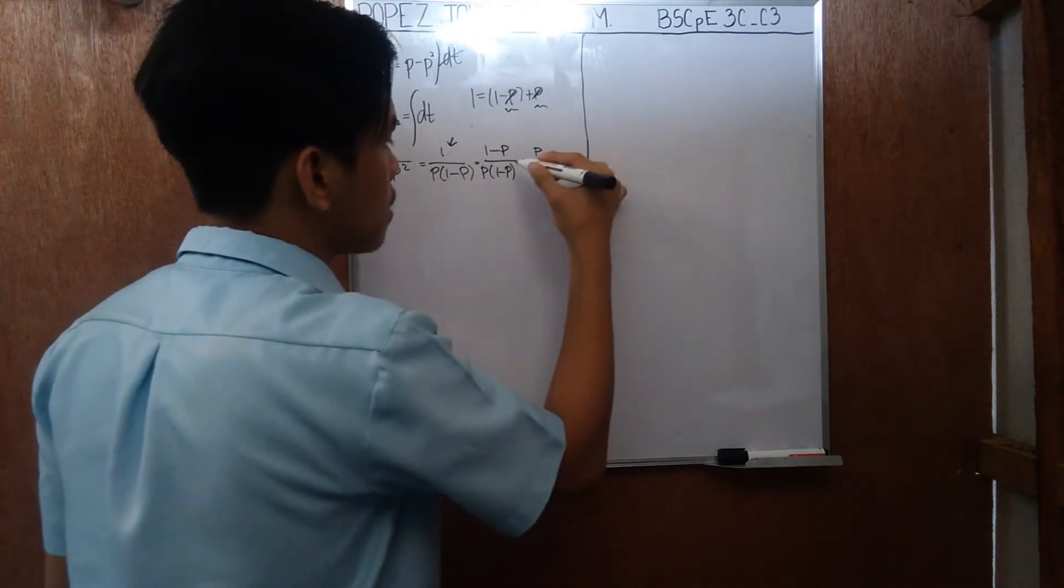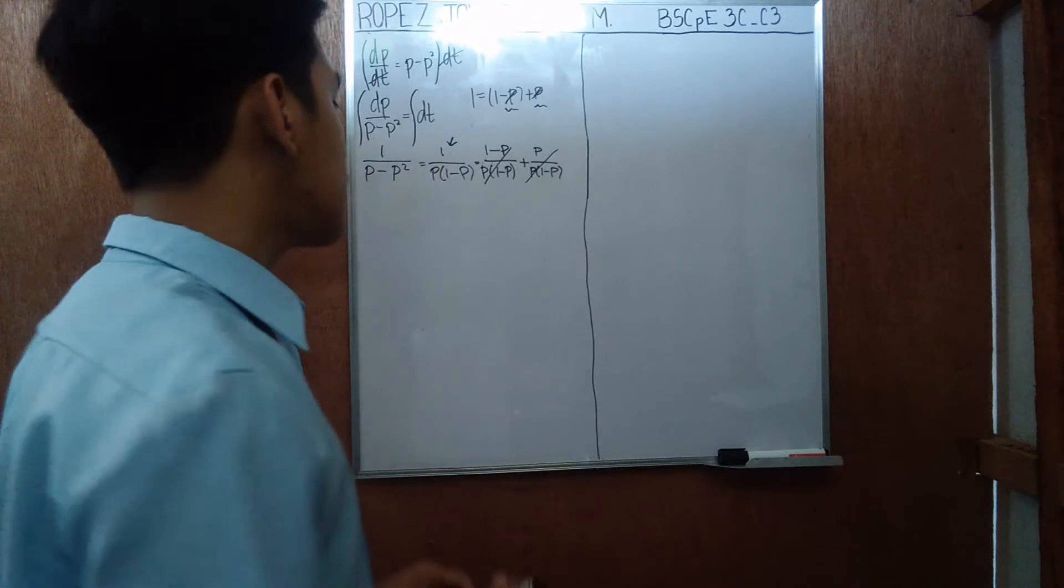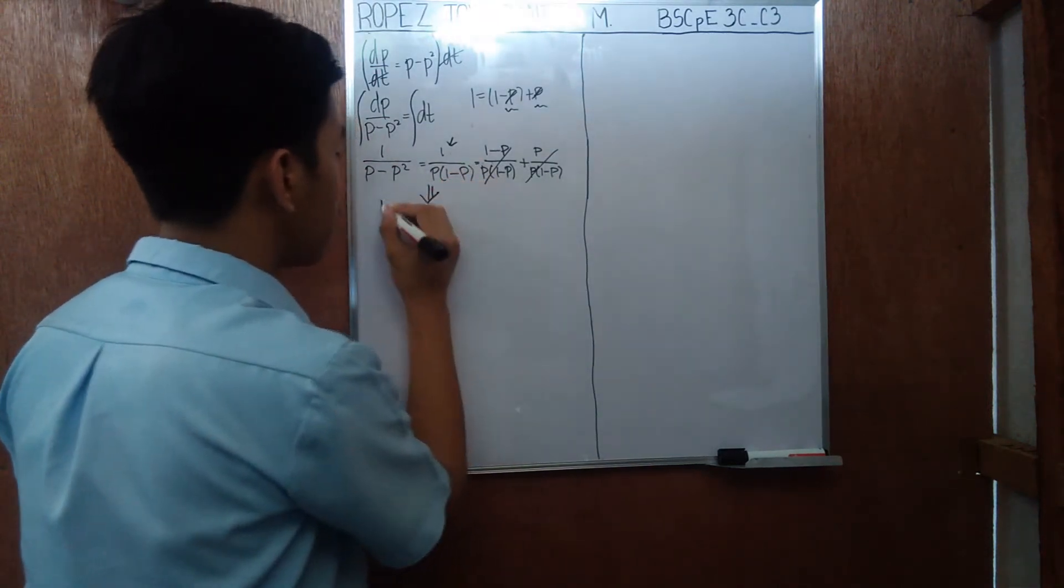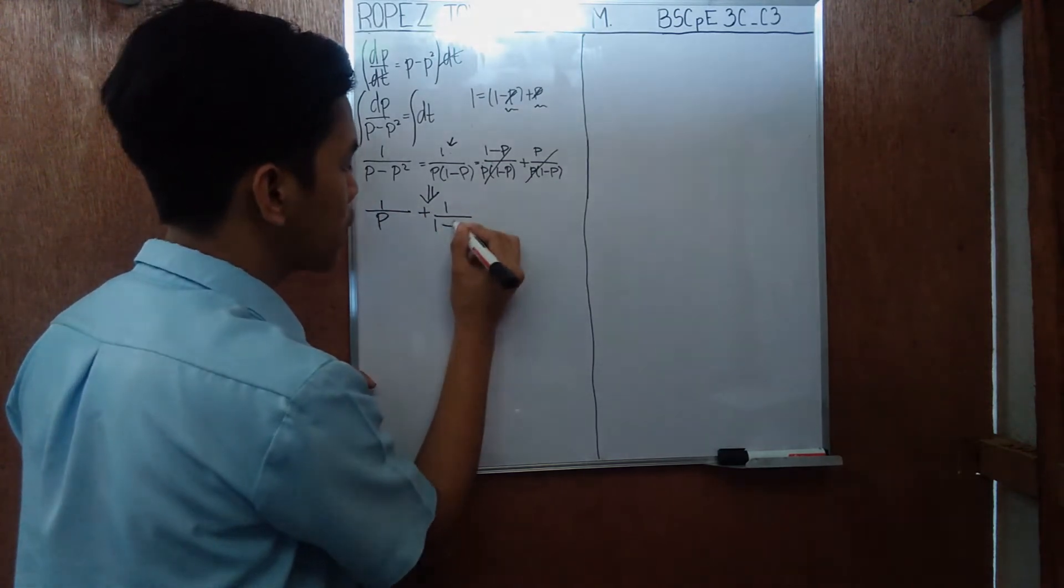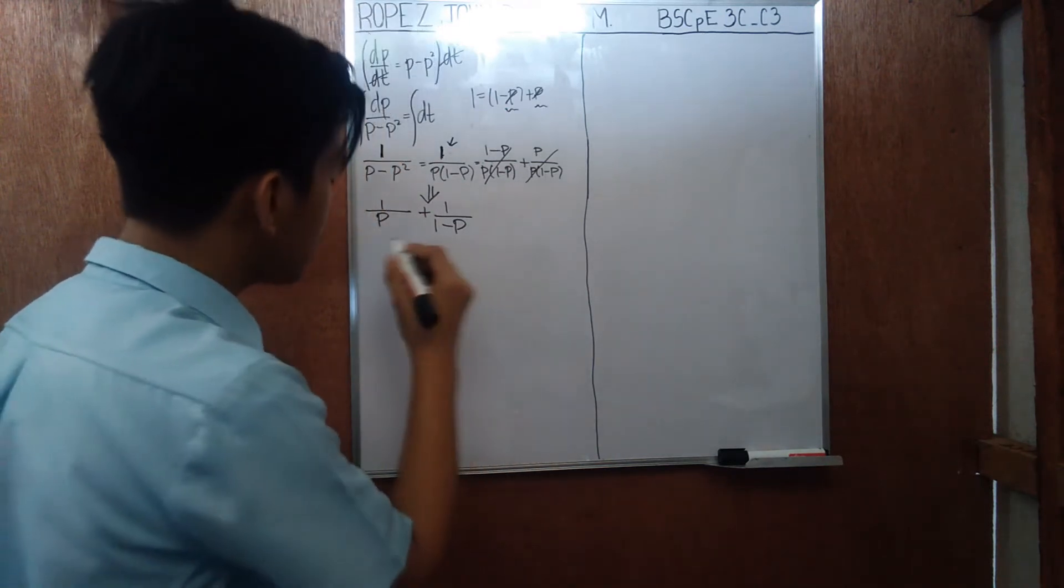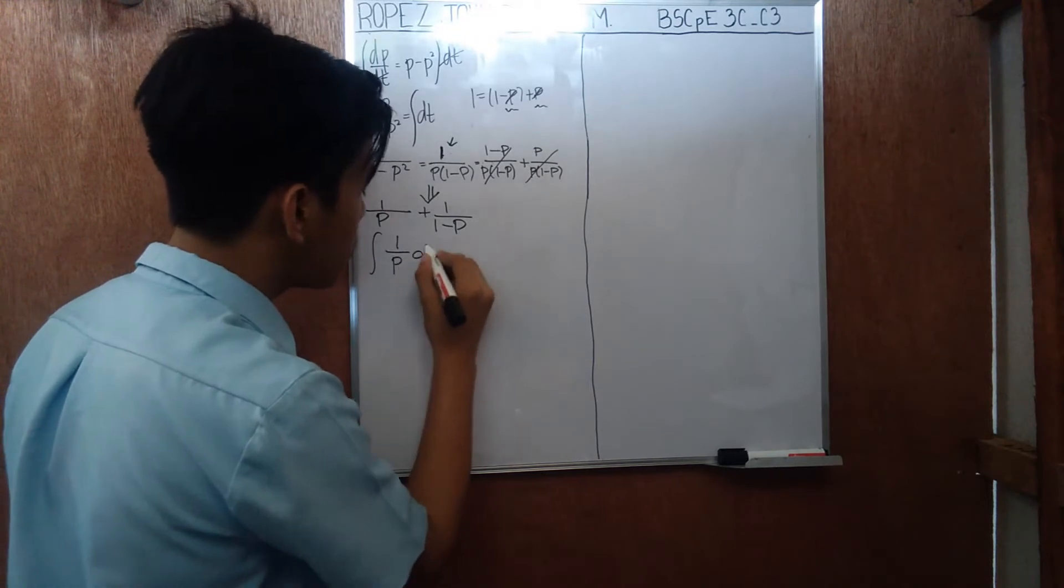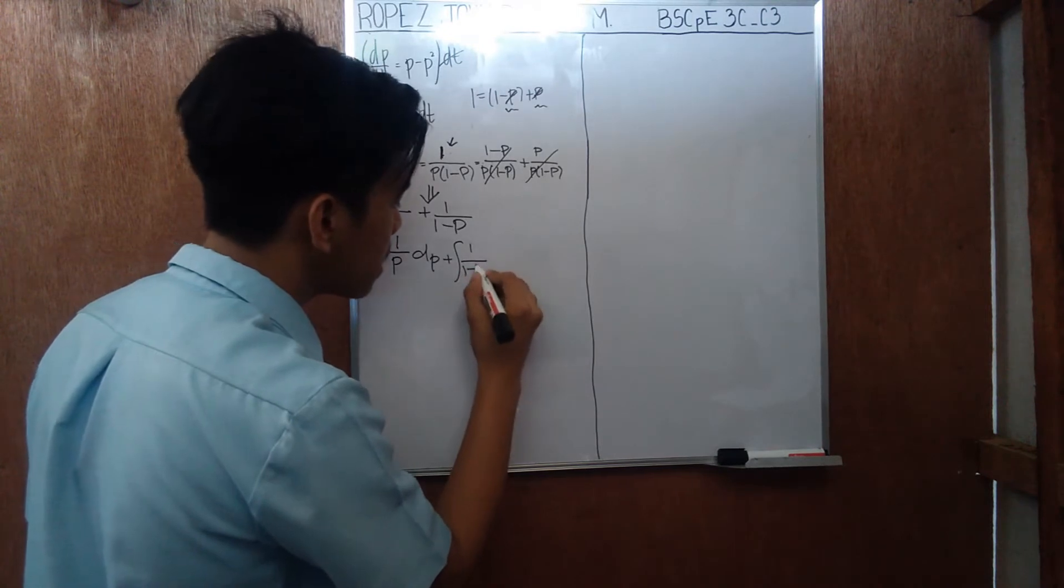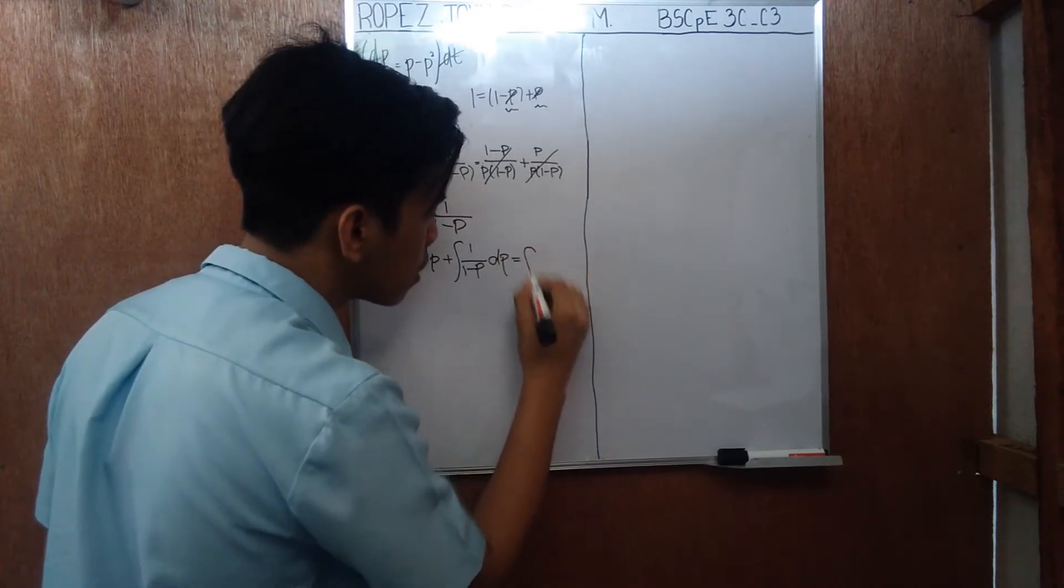And then break it up. So cancel, cancel. This is equals to 1 over p plus 1 over 1 minus p. So now the integral on the left hand side will give us integral of 1 over p dp plus integral of 1 over 1 minus p dp. And it is equals to integral of dt.